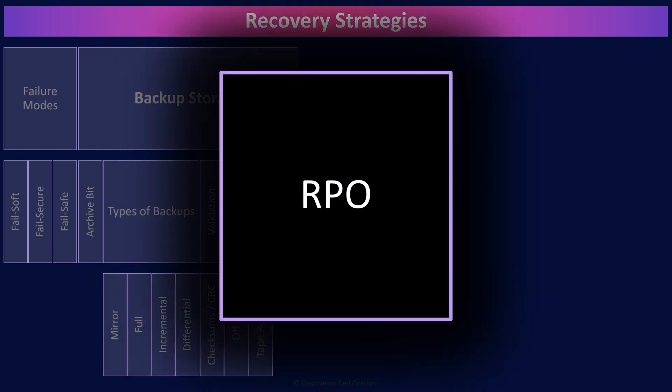The recovery point objective (RPO) is the maximum tolerable data loss an organization is willing to accept, measured as time — five seconds worth of data, five minutes, five hours, five days. The RPO is a major driver of the cost of a backup solution. The shorter the RPO — meaning the less data an organization is willing to lose — the more expensive the backup solution is going to be. So if an owner wants to reduce associated costs with backups, they may need to look at increasing their RPO requirement.